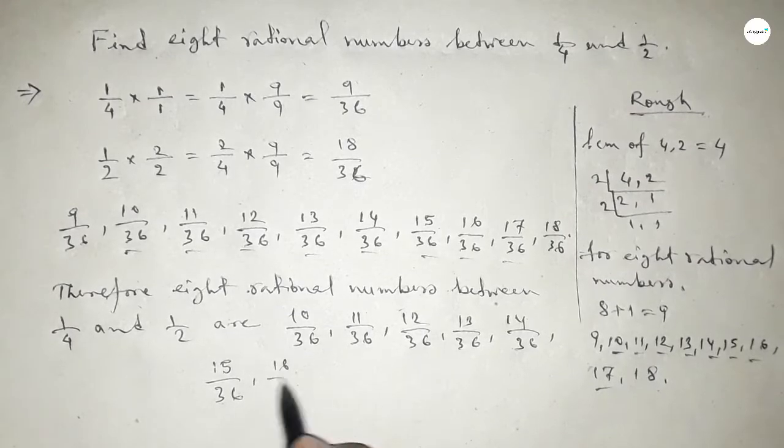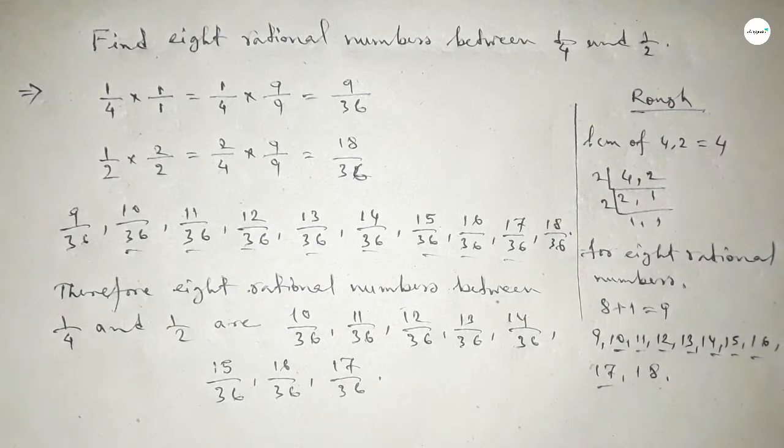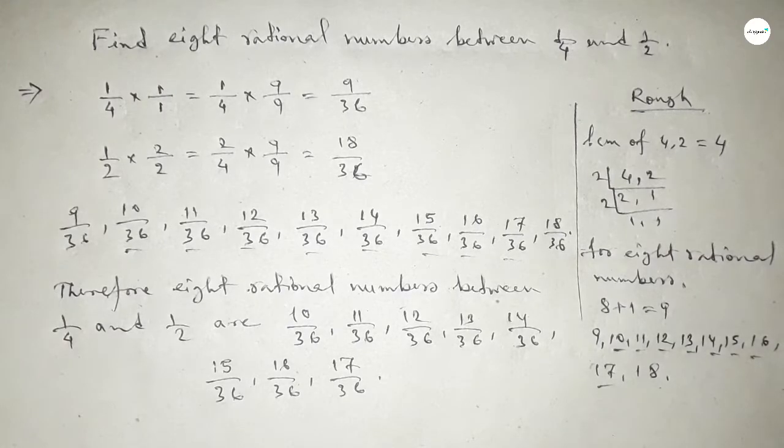So this is the process to find out 8 rational numbers between 1 over 4 and 1 over 2. That's all, thanks for watching.